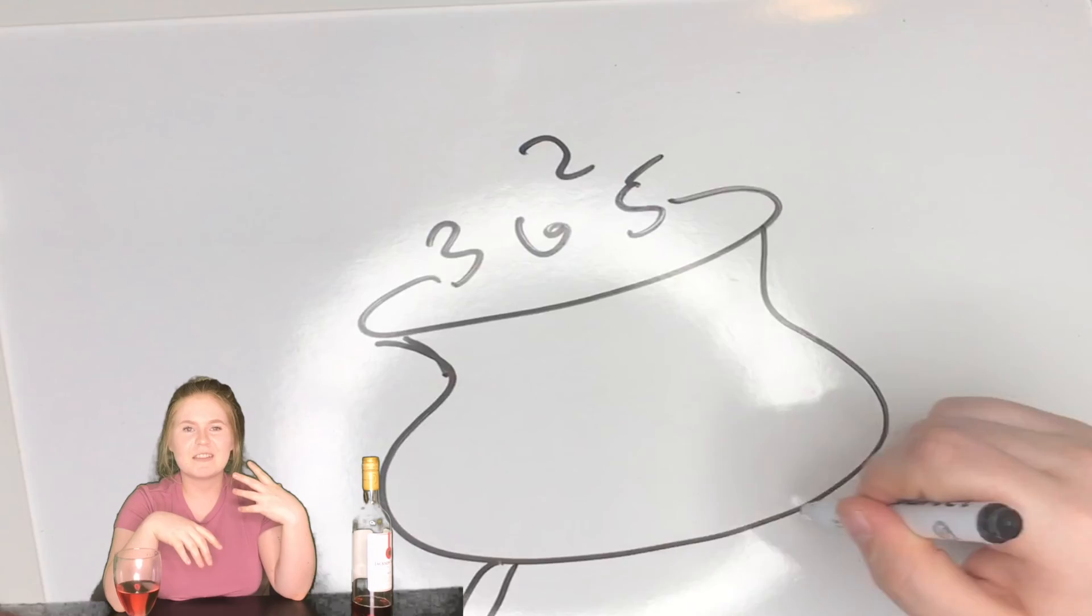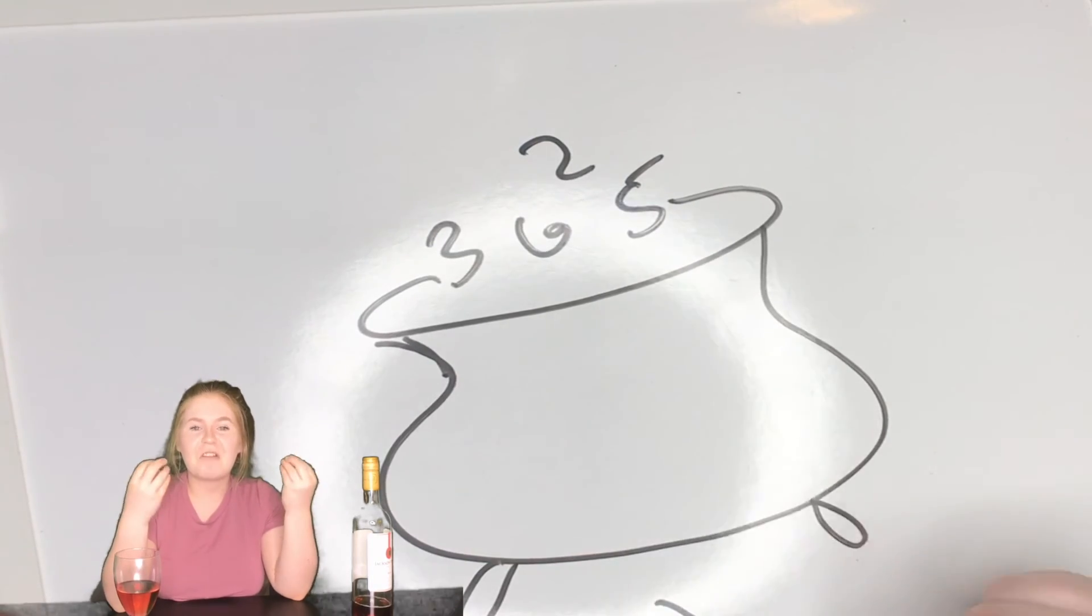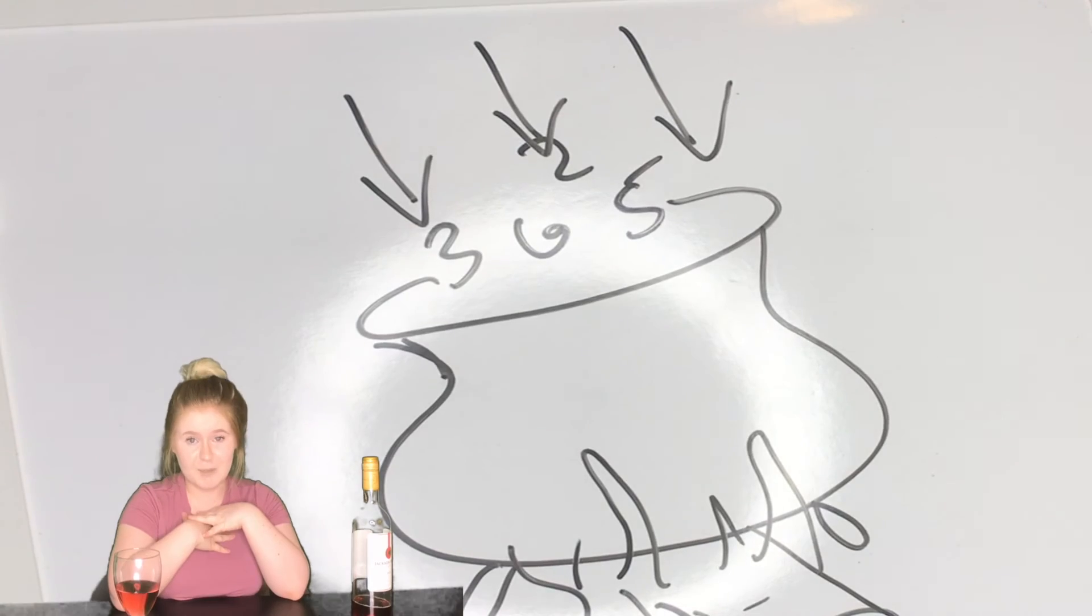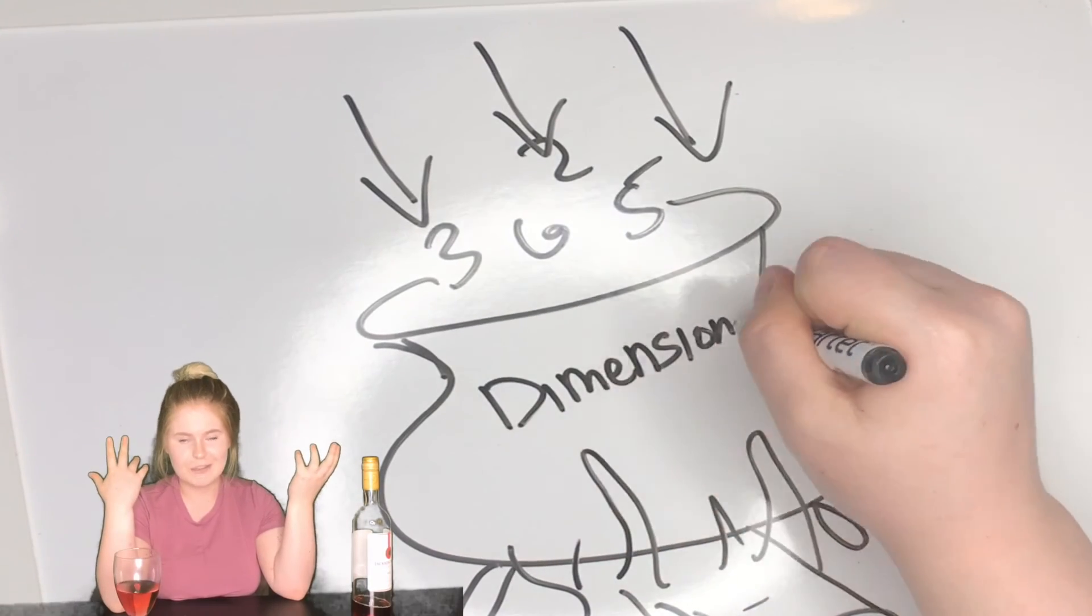But the problem is, they need to boil down the math from 10 dimensions down to our dimensions, because obviously we don't have a lot of dimensions. That'd be crazy. So, we haven't come up with a theory of everything yet.